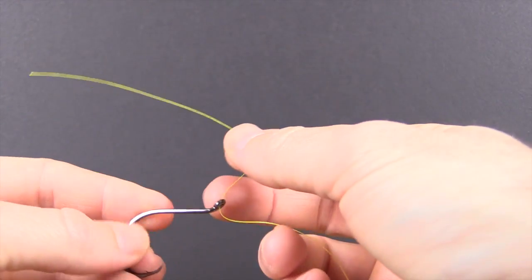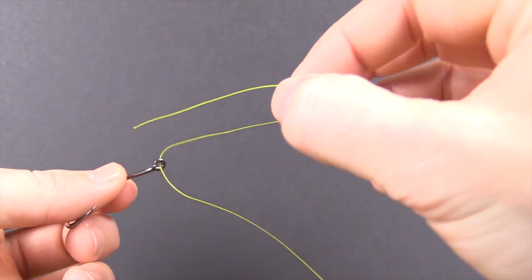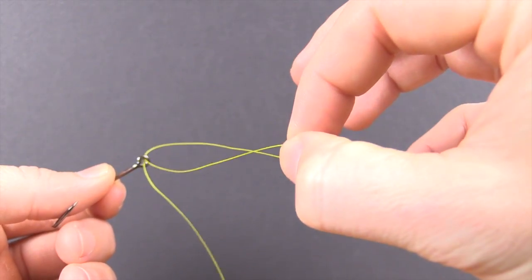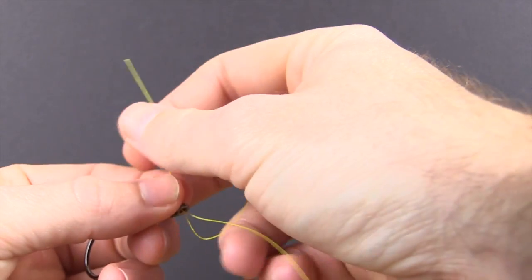First, just go through the eye, and then here is the first difference. I recommend going through twice, go through that eye two times, that'll just strengthen the knot.